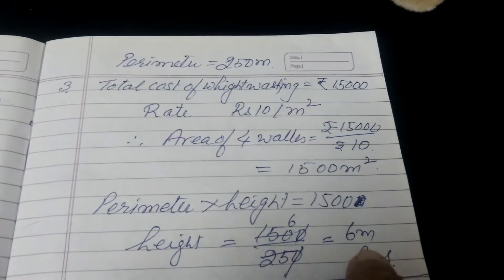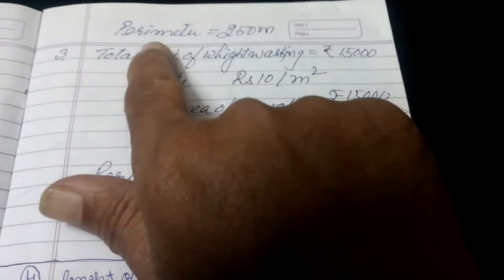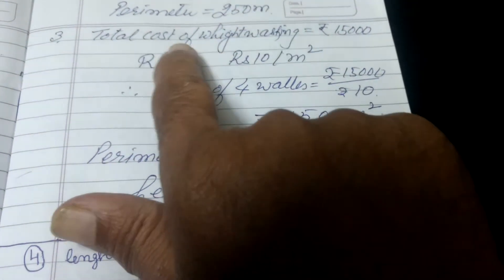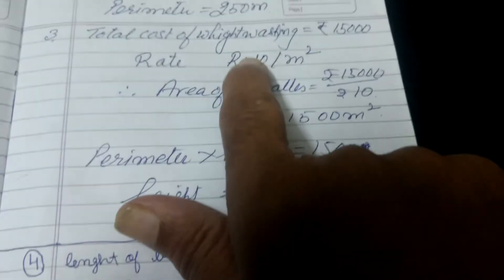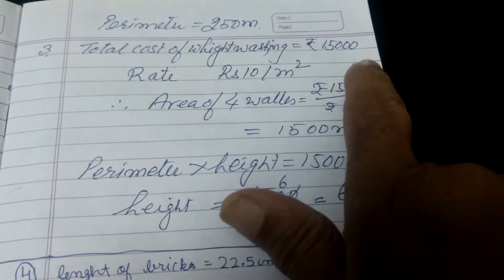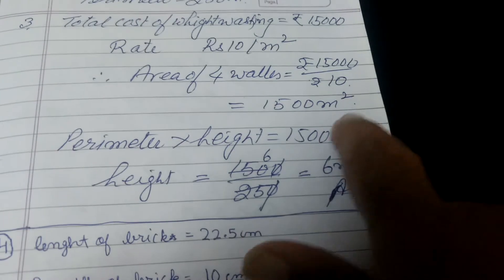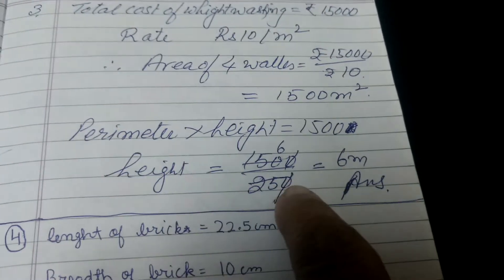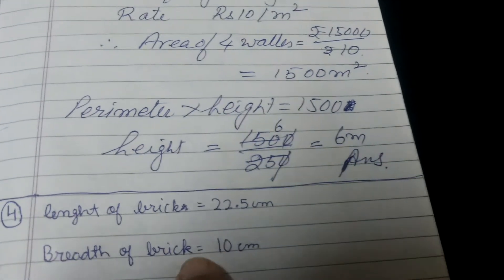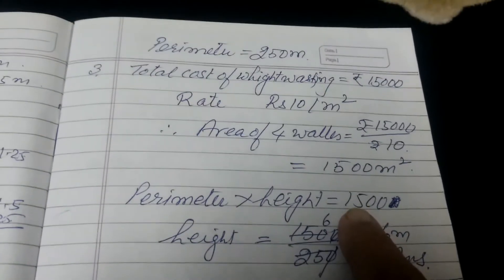So what was given? We had a cost and a rate. We divide by the rate to get the area. If we divide the area by the perimeter, we get the height. So this was your sum number 3.